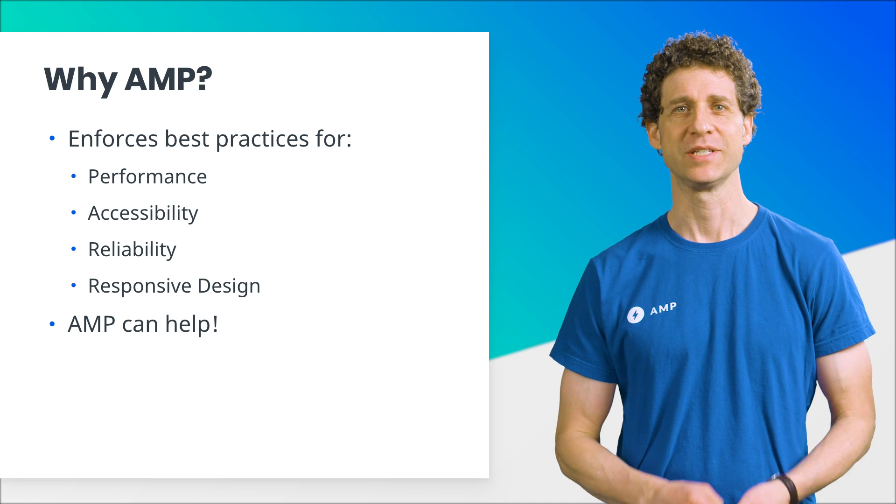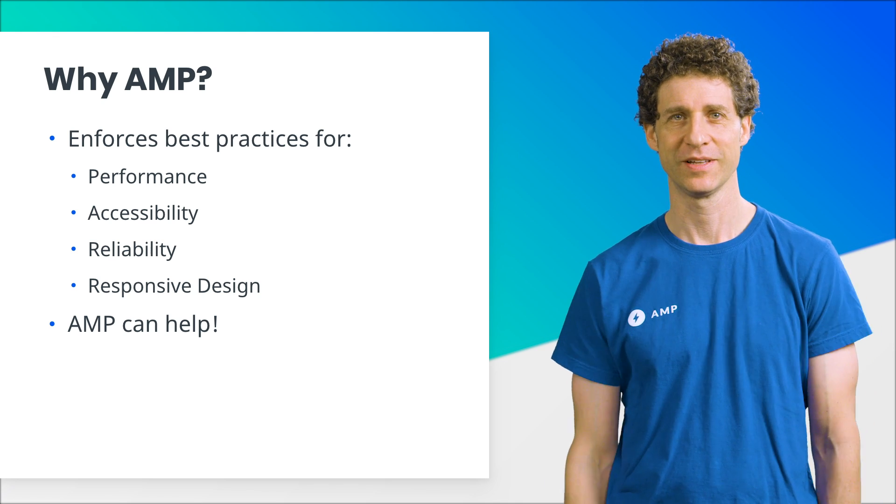In short, AMP is here to help. AMP is a web components library that enforces best practices for the web. We make it easier to build performant, accessible, and responsive websites. The library also frees developers to focus on features and on bringing value to users. We like AMP as educators because it makes it really easy for developers to do the right thing. Let's look at how AMP improves web performance.